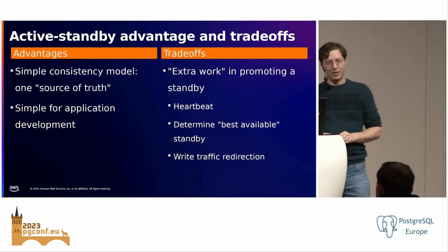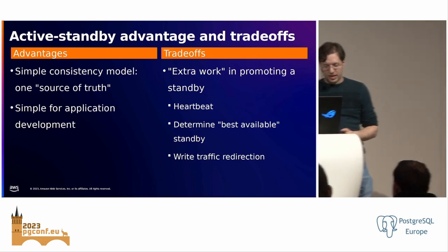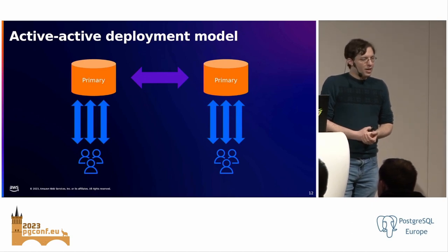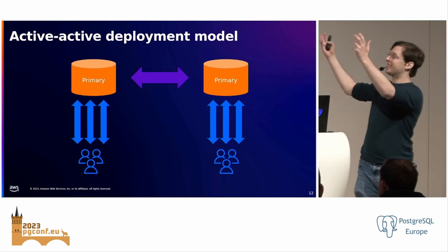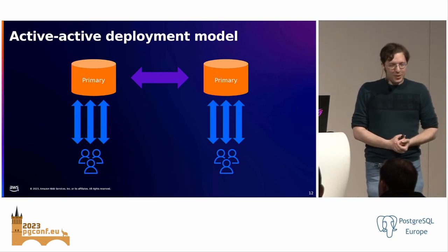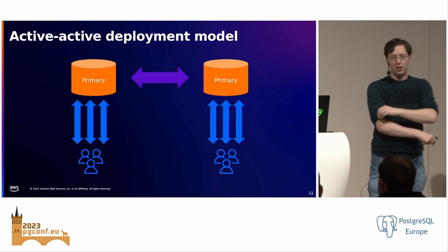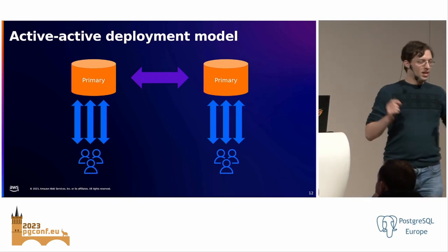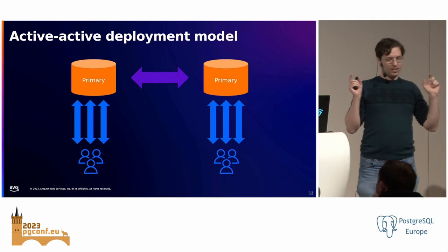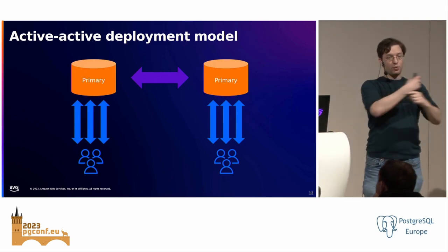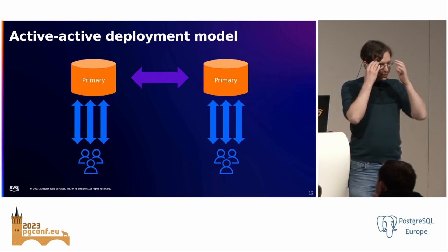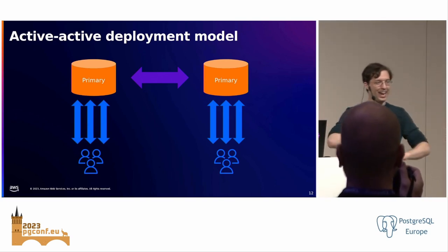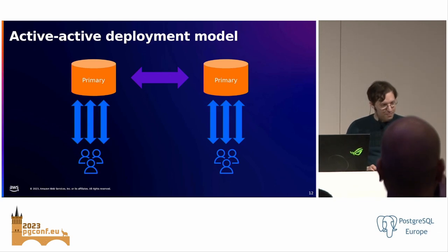Now we get to active-active. You might say: you just told me you don't want multiple primaries — so why are you showing me a system with multiple primaries? That's a very good question. The reality is this model exists for relational databases where multiple primaries simultaneously accept writes and replicate changes back and forth to each other. The first time I saw active-active as an app developer, I thought: this is a panacea, this solves all my problems!